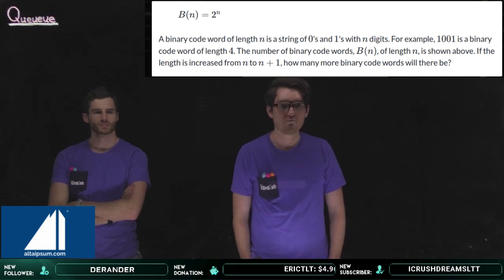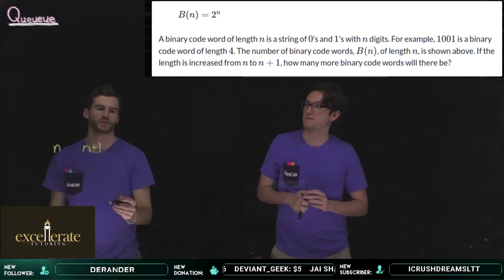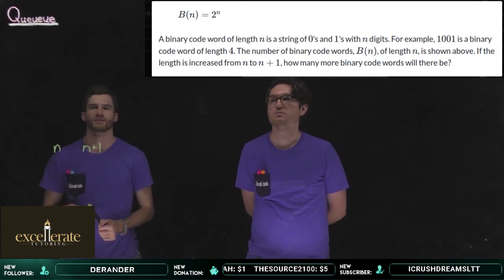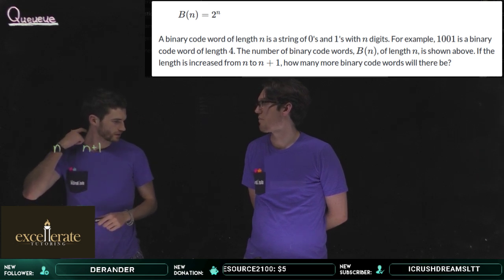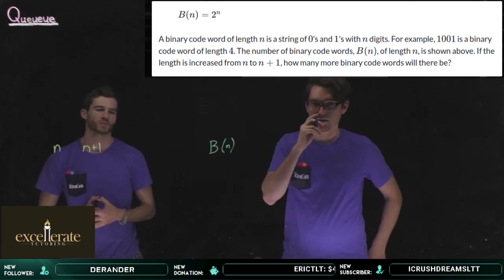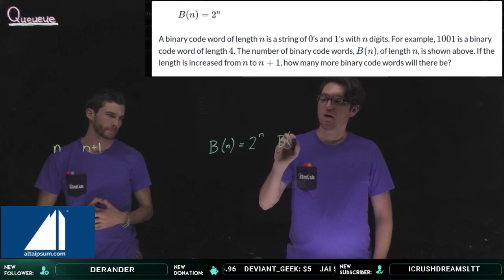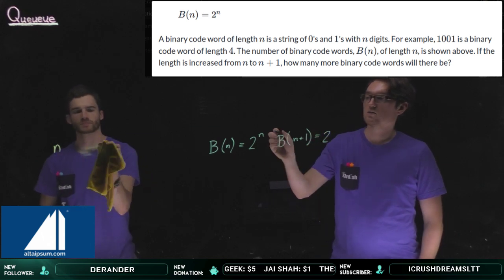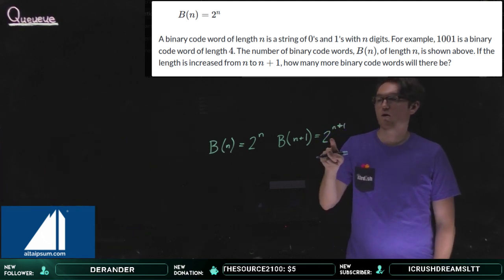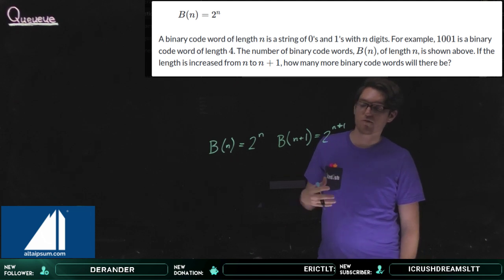If the length is increased from n to n plus 1, how many more binary code words will there be? There are no logs on the SAT. You just need to know that logs become exponents and then you can do all the same stuff. We take our input and put that as the exponent of 2, so 2 to the n plus 1. The question is how do we compare these two?